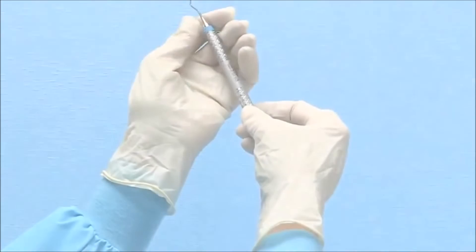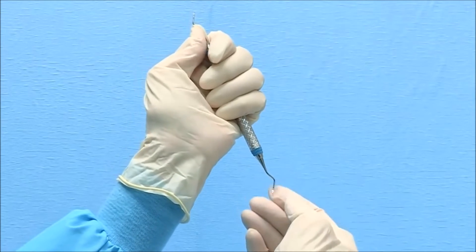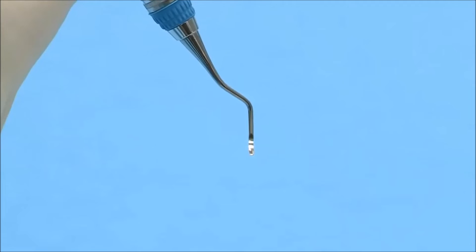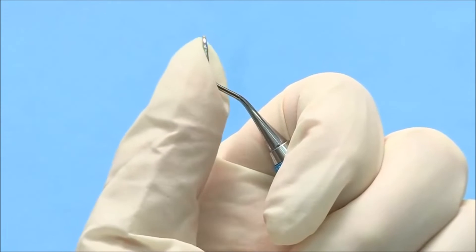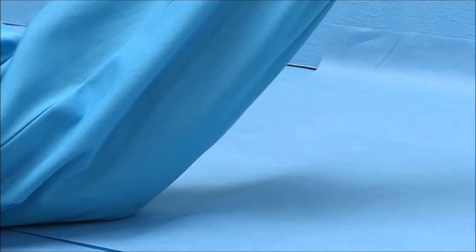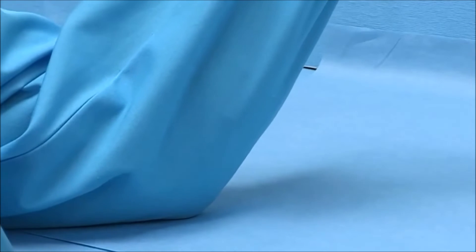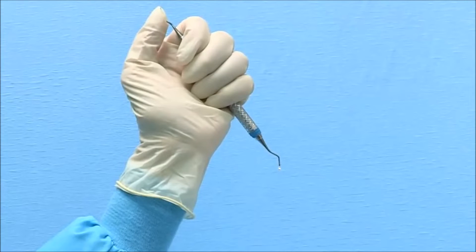To begin the sharpening process, hold the Universal Curette vertically in your non-dominant hand. The blade to be sharpened will be at the bottom with the toe pointed toward you. Brace the top shank with your thumb and place your elbow directly in front of you on the table. This positioning is very important as it will counterbalance the pressure that will be applied when sharpening the lower blade.